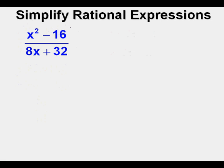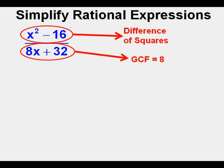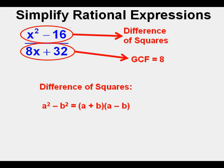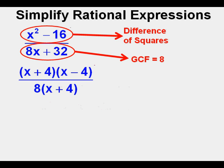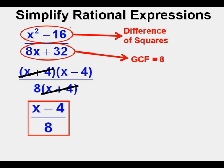Next we'll simplify x squared minus 16 divided by 8x plus 32. In the denominator, the greatest common factor is 8. In the numerator, x squared minus 16 is a difference of squares. The rule for difference of squares is a squared minus b squared equals quantity a plus b times quantity a minus b. So this simplifies to quantity x plus 4 times quantity x minus 4 in the numerator, over 8 times quantity x plus 4 in the denominator. Quantity x plus 4 cancels, leaving the simplified answer x minus 4 over 8.